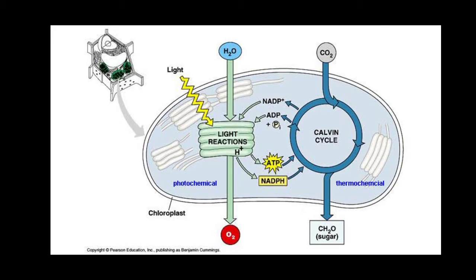In the process of light reactions, ATP and NADPH are generated inside the thylakoid. This ATP and NADPH come out of the thylakoid and are directly utilized in the stroma in a cyclic biochemical reaction called the Calvin-Benson cycle. This is also known as the dark reaction — or more accurately, the light-independent reaction — and it is where carbon dioxide is fixed and sugar molecules are formed.